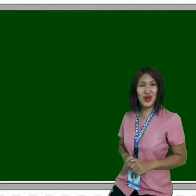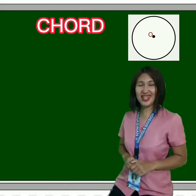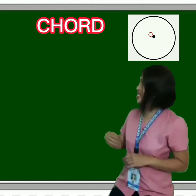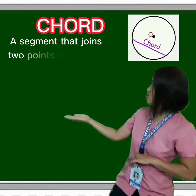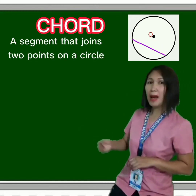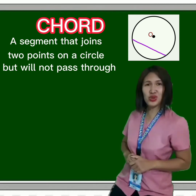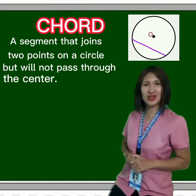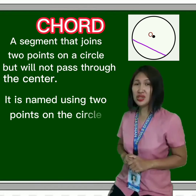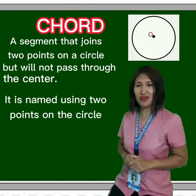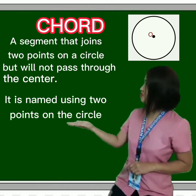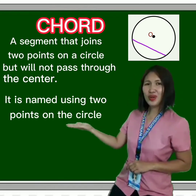Another term is a chord. It is a segment that joins 2 points on the circle, but will not pass through the center. It is named using 2 points on the circle.